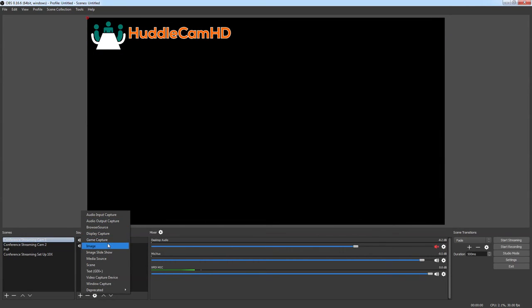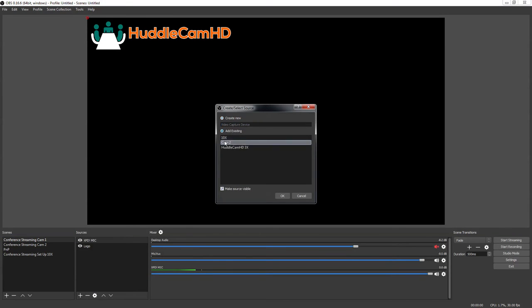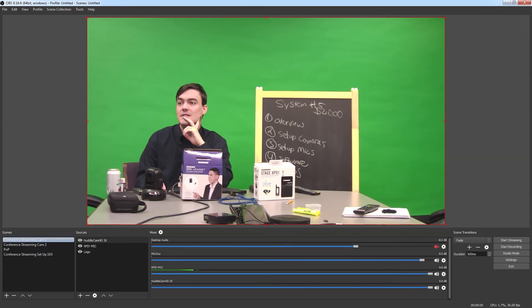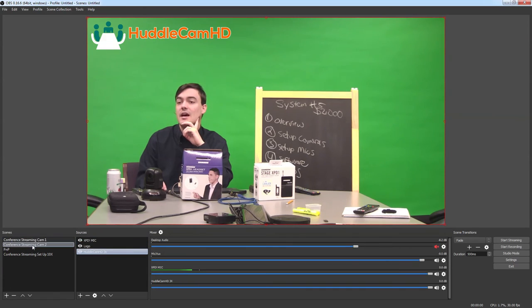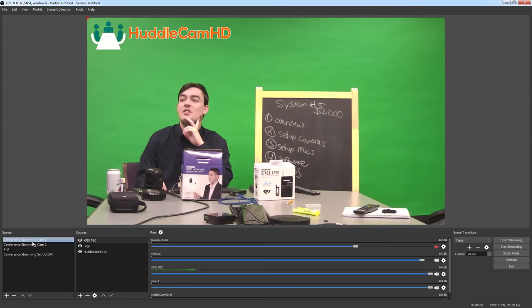So we've got our audio, now let's add our camera and we'll go in here to video capture device. Add our 3x and there's our camera. Now if we put it below the logo it goes like that. So that's how we transition between the multiple cameras. That's a pretty quick down and dirty layout, we have a complete course on OBS if you want to learn more.